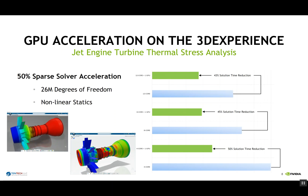Similarly, for a larger model — still in the 3D Experience Platform — this is a nonlinear statics thermal stress analysis: thermal expansion and isothermal stress calculations. This is a bigger model at 26 million degrees of freedom. We see the same trend: 50% across the board in terms of performance gain. Again, a 4-core plus 1 GPU is practically the fastest compared to an 8-core and a 12-core, allowing us to use all licensing tokens in a much more efficient manner.